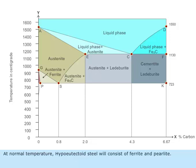At normal temperature, hypoeutectoid steel will consist of ferrite and pearlite.